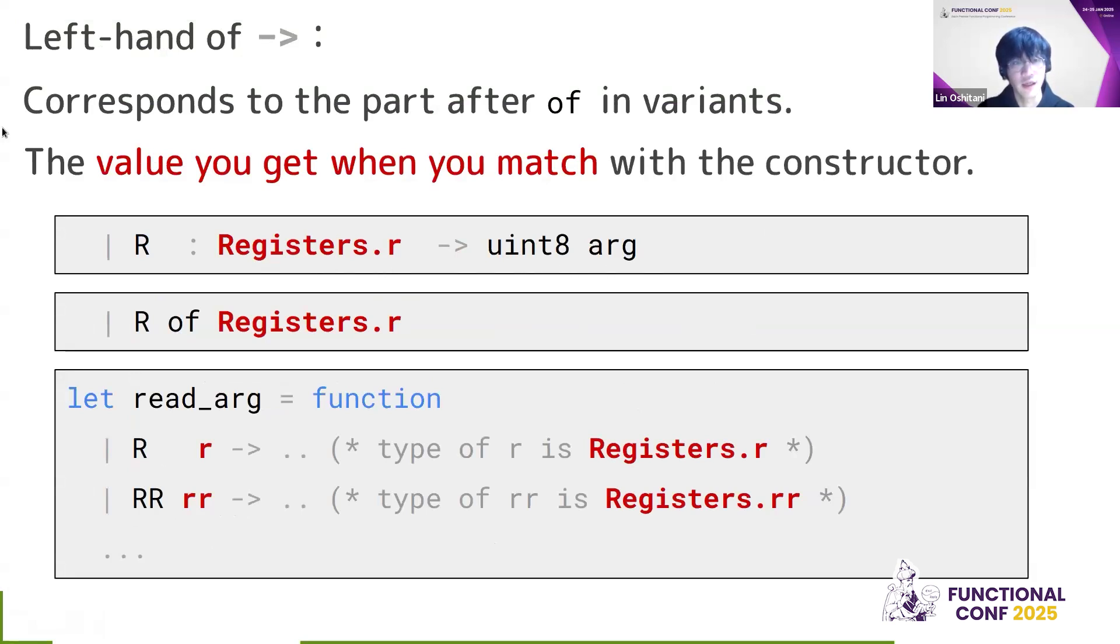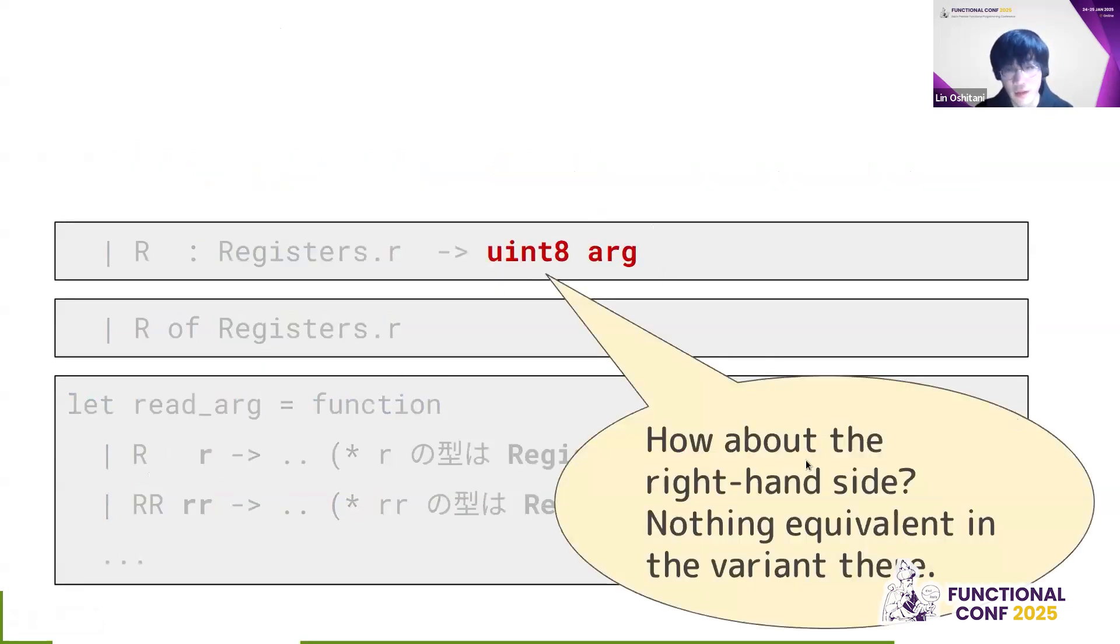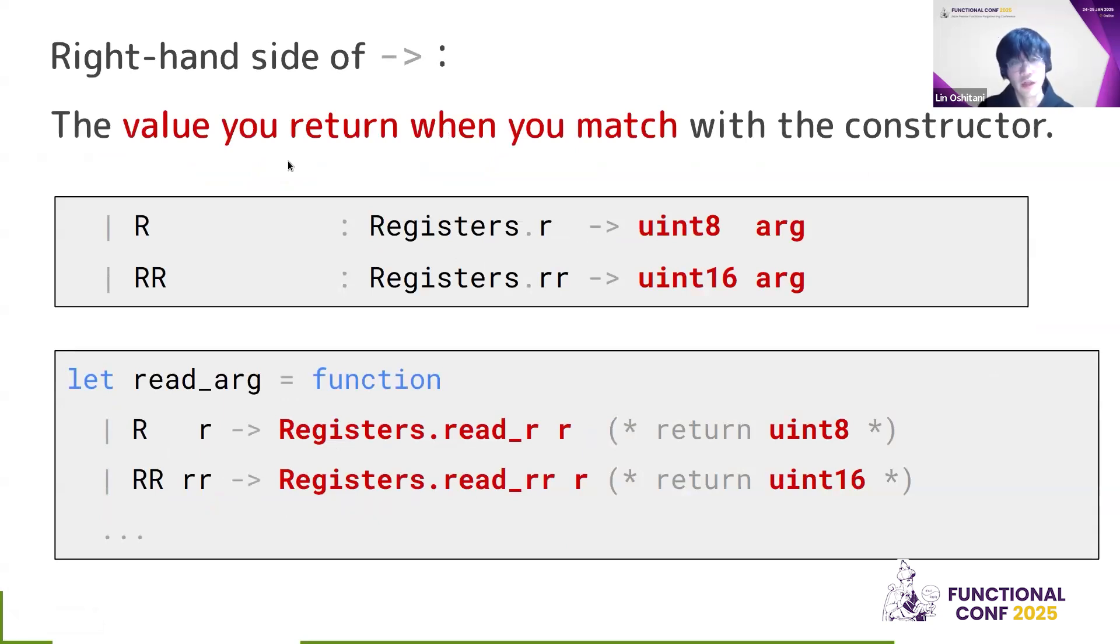So the left-hand side of this arrow of the GADT case, it actually corresponds to the part after of in the variants. So r of register dot r, it serves the same purpose. And namely, it's a value that you get when you match with the constructor. So when you call read arg and you match against the r, then this variable r is actually the 8-bit register value. And if you match against the rr, the value that you get is a register dot r with a 16-bit register. So the value you get on each of these match cases, it's different and it's defined here. Okay, but that's all good. But what about this part? The right-hand side of the arrow? There's nothing equivalent in the variant case there.